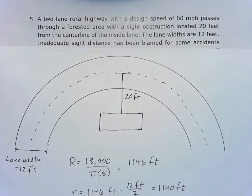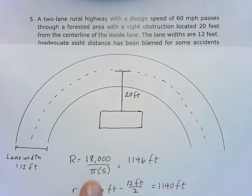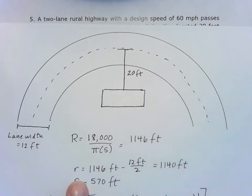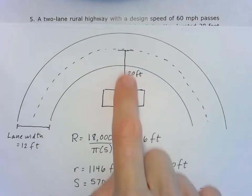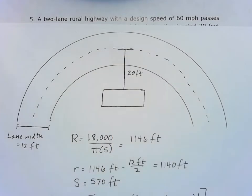In this case, my radius is the 18,000 over pi times the curve of that road, so that's 1146. Now little r, which I'm solving for here, is that radius minus that halfway to that inside lane, so 12 feet over 2, 1140.